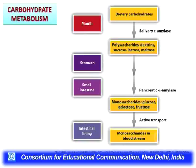Dietary carbohydrates are taken up from the mouth and acted upon by salivary amylase, which degrades polysaccharides into oligosaccharides and disaccharides such as sucrose, lactose, and maltose. In the stomach and intestine, various enzymes convert them into monosaccharides — glucose, galactose, and fructose — which are absorbed from the intestinal lining into the bloodstream for subsequent metabolic pathways.